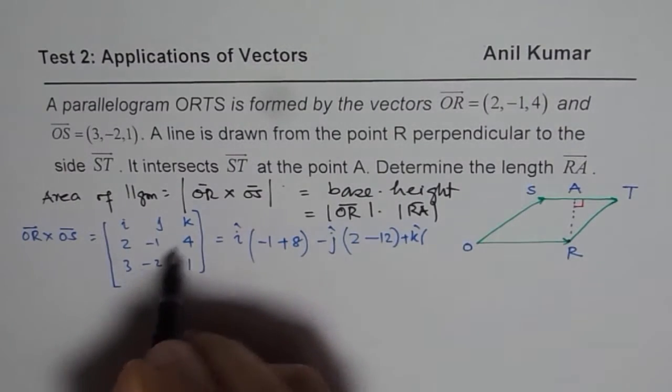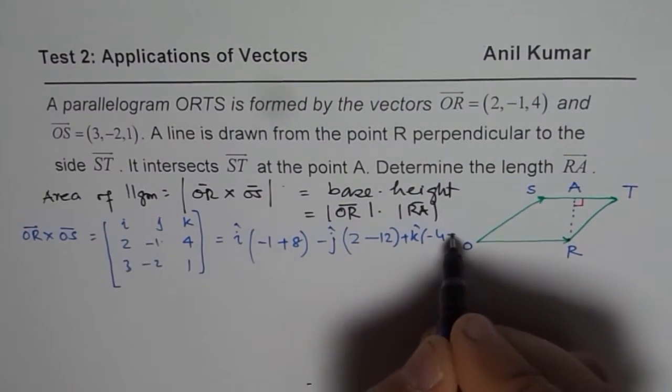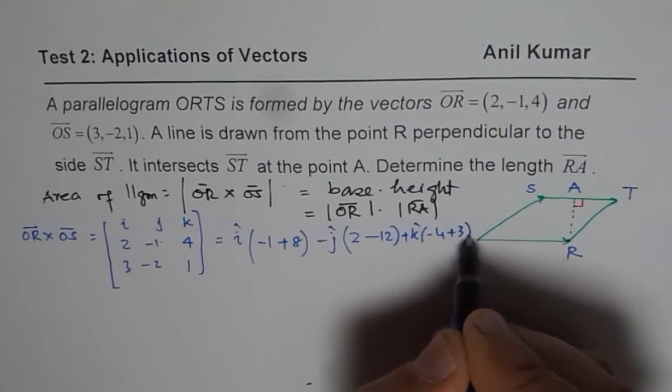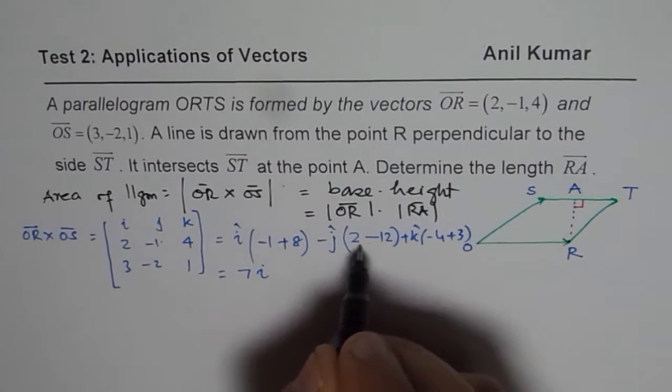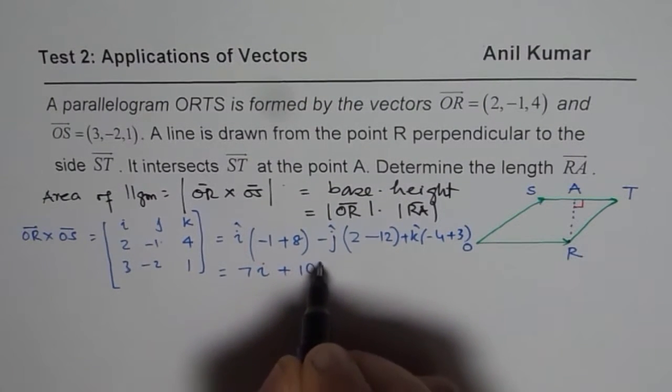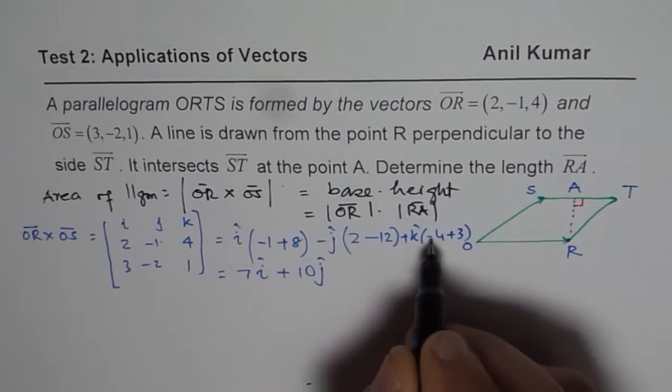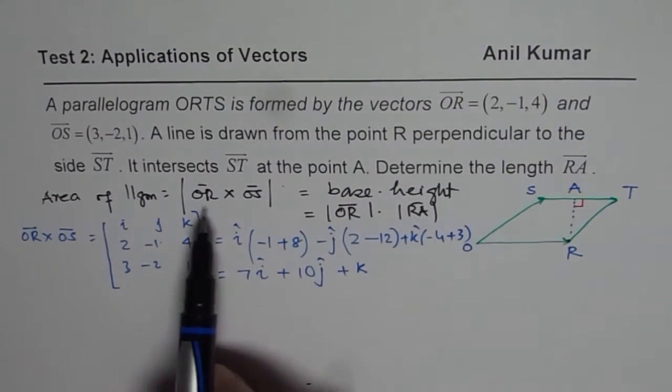These are unit vectors. 2 times -2 is -4, minus of -3 becomes +3. So we could write this as 7i and this is 10 with a minus sign. So it becomes +10j. As far as k is concerned, +k. So that is the cross product. That is the left side.